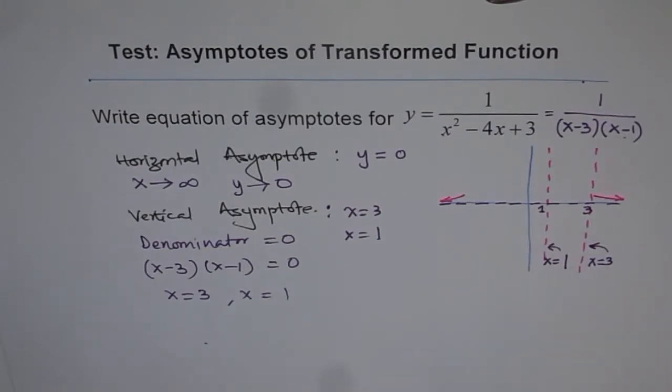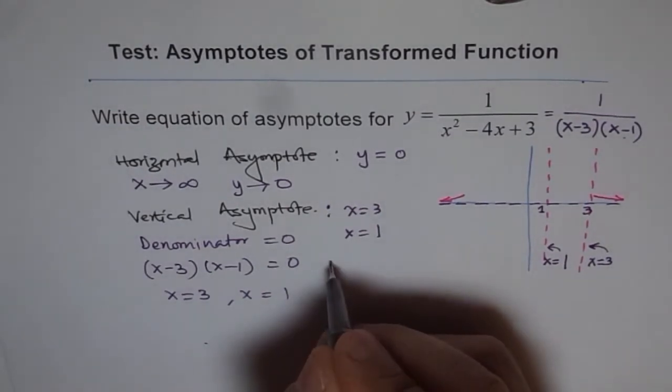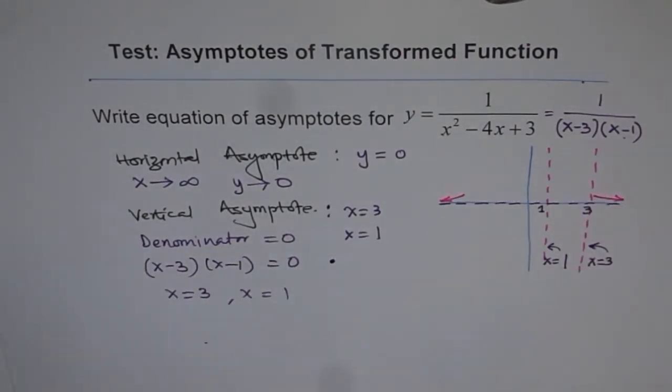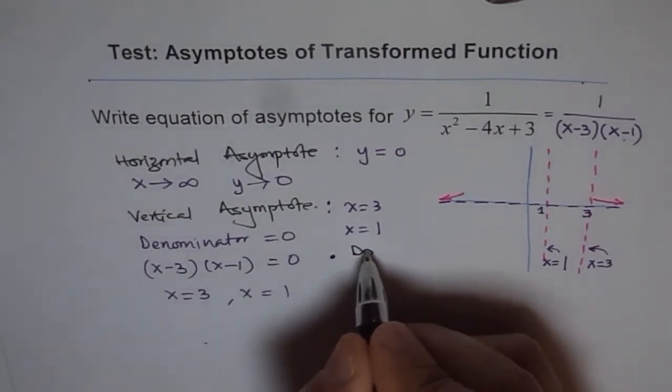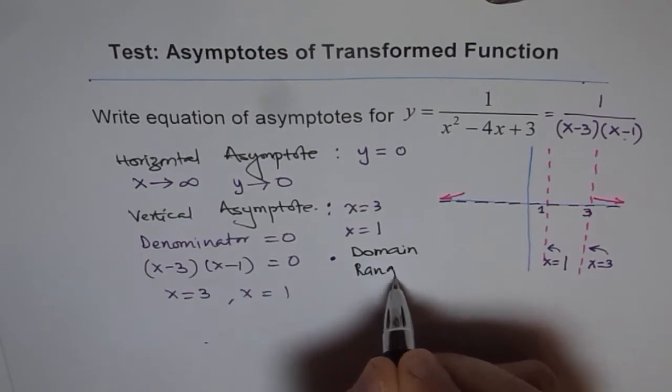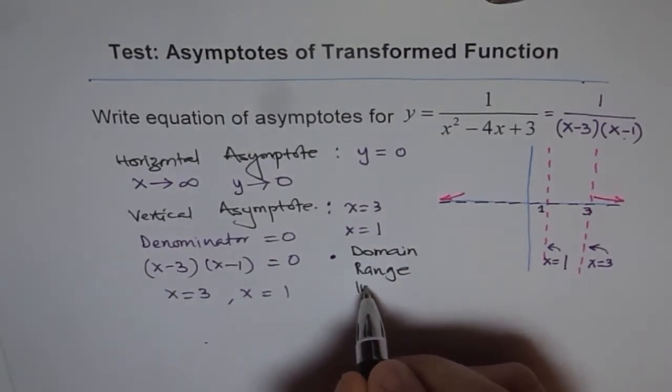As an added exercise, I would like you to analyze this, complete the graph, and write all the characteristics of the given transformed function. By characteristics, I mean domain, range, and intervals of increase and decrease.